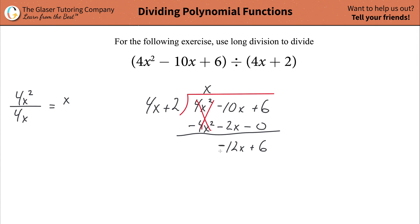Now we do the process again. This is your new dividend. So we're going to take the highest x term here in your divisor, which is 4x, and divide it into the highest x term in your dividend, which is now negative 12x. So do the work on the side. Negative 12x divided by 4x. So what does this simplify down to? X's cancel. Negative 12 divided by 4 is simply going to be a negative 3. This is now your quotient value. So it's x minus 3 now at the top.